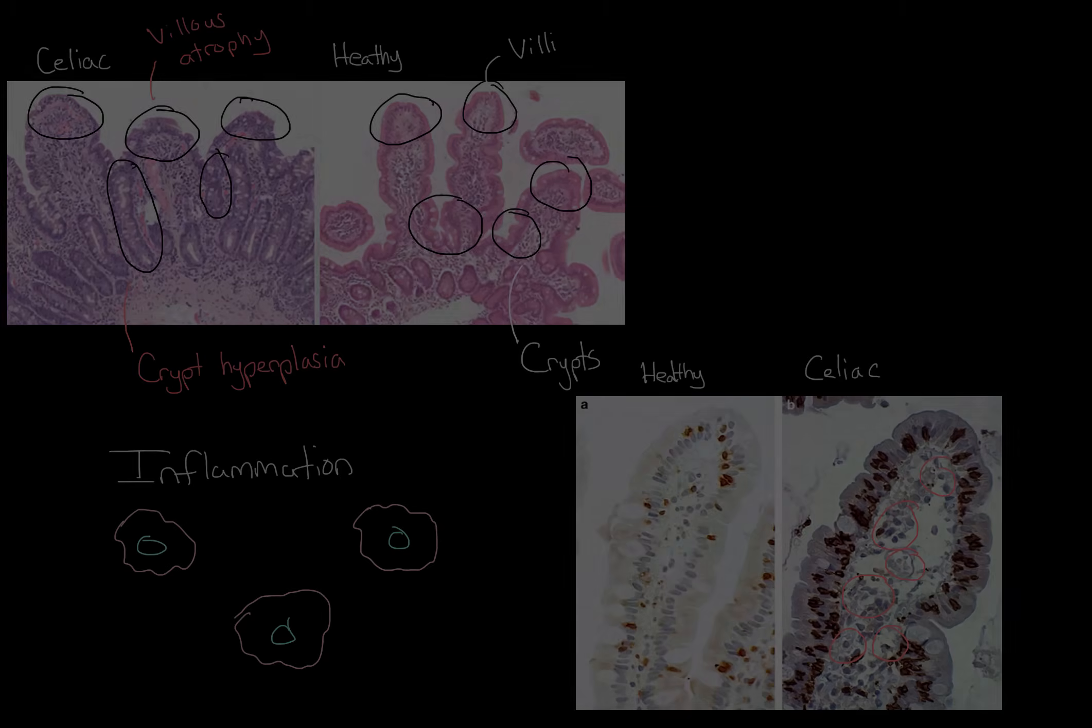But diagnosing it is one thing. How can we really treat it? Well, unfortunately, there aren't really many medicines or procedures available to treat celiac disease. Once the gliadin from the gluten makes its way into the body, it's pretty difficult to stop the antibodies from marking them. So ultimately, the best thing that anyone can do is to simply go on a gluten-free diet.